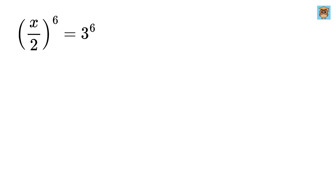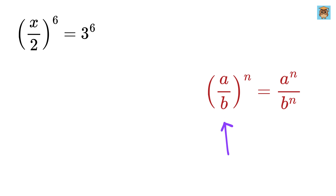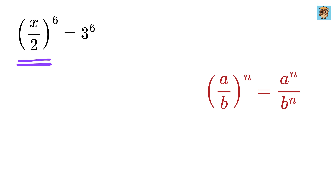As a first step, we need to understand what it means to raise a fraction to a power. Using this rule of exponents, when we have a fraction inside brackets and raise it to an exponent, we apply the exponent to both the numerator and denominator separately. This means x divided by 2, raised to the power 6, is the same as x raised to the power 6 divided by 2 raised to the power 6.